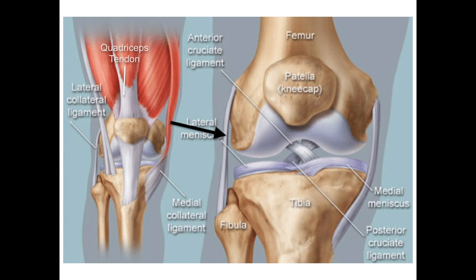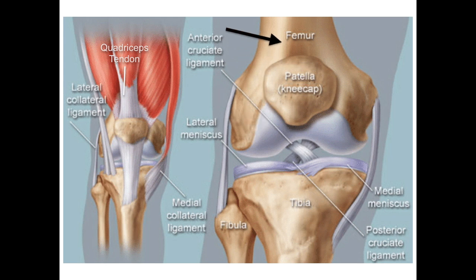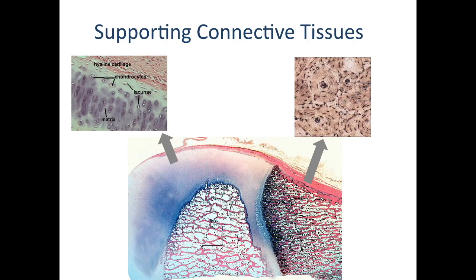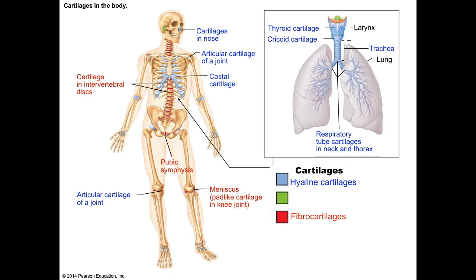The other types of connective tissue here are cartilage and bone. These fall under the category of supporting connective tissue because these skeletal tissues exaggerate the supportive functions of connective tissue by providing the main framework of the body. This video is just going to cover cartilage, and next we'll cover bone.